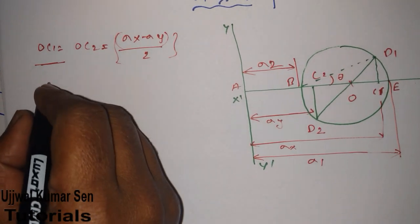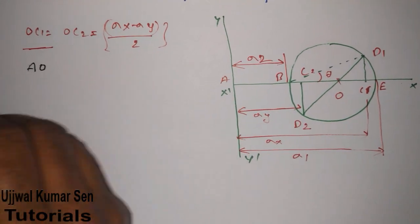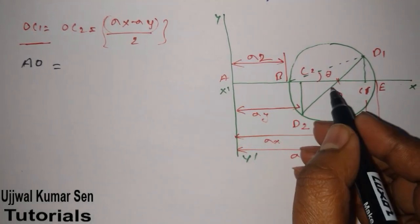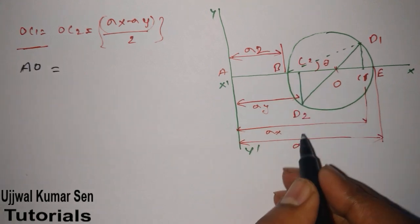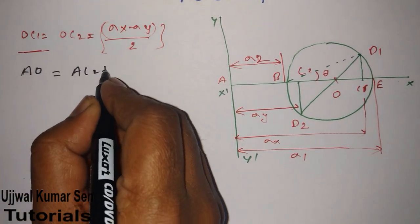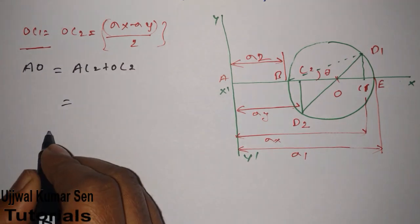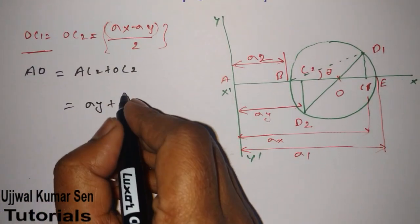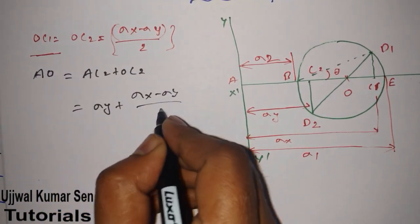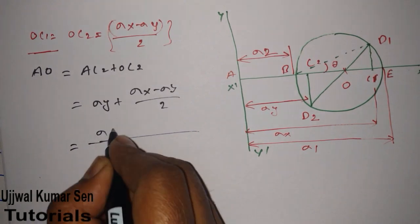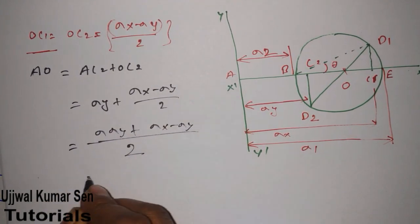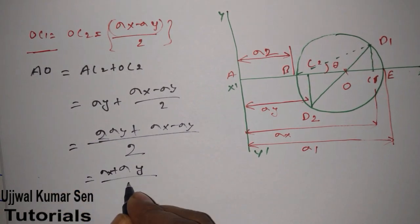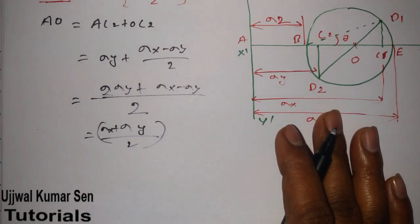Now let's find AO. AO equals AC2 plus OC2. AC2 is sigma y, and OC2 we already found is (sigma x minus sigma y) / 2. Doing the simplification: 2·sigma y plus sigma x minus sigma y over 2 gives us (sigma x plus sigma y) / 2. So AO equals (sigma x plus sigma y) / 2.